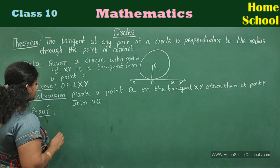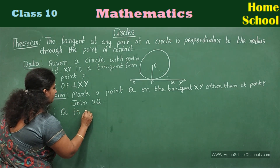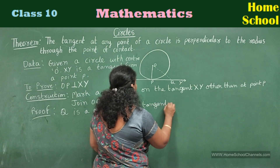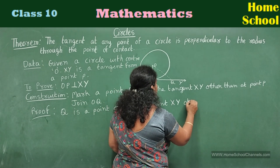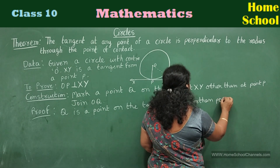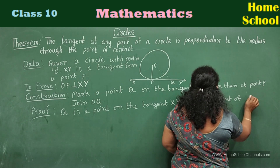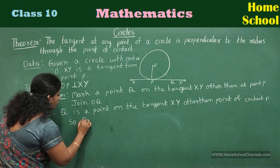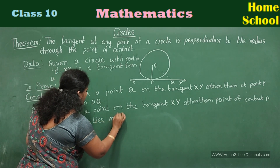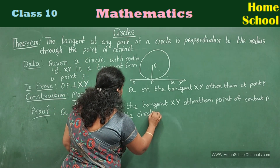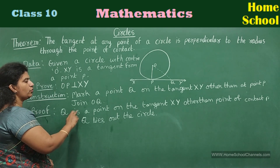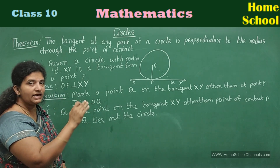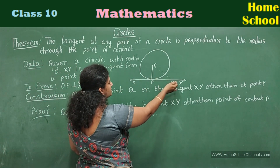Proof: Q is a point on the tangent XY other than the point of contact P. Since a tangent touches the circle at only one point, Q lies outside the circle.